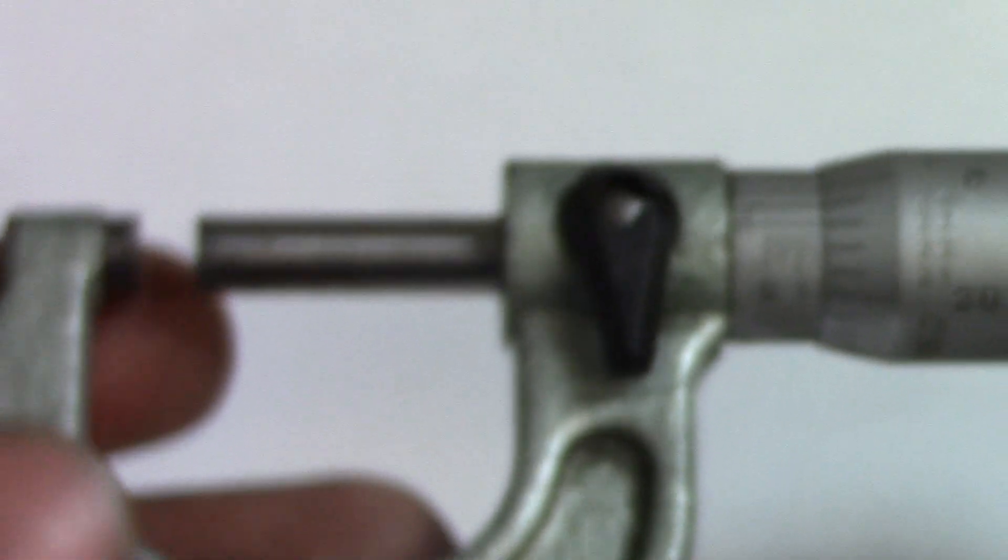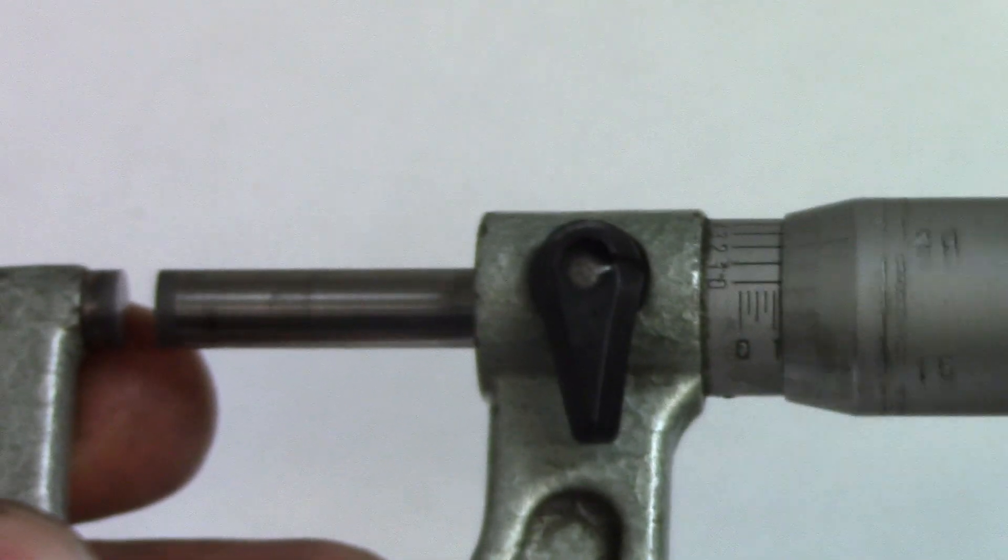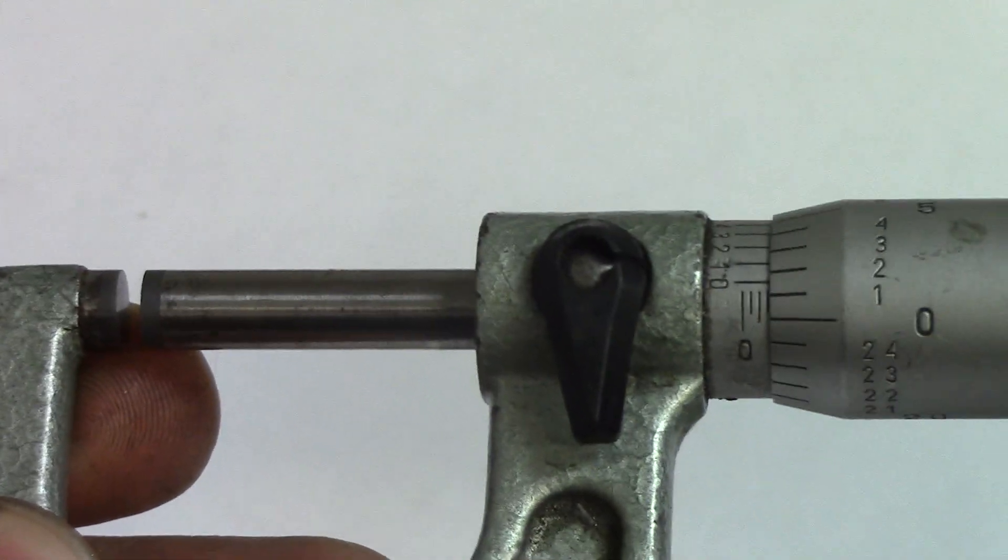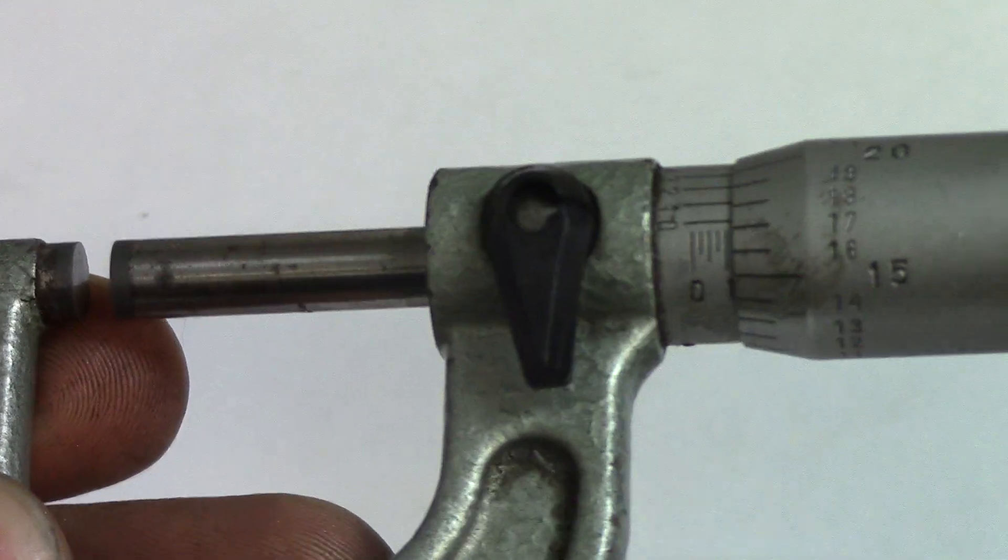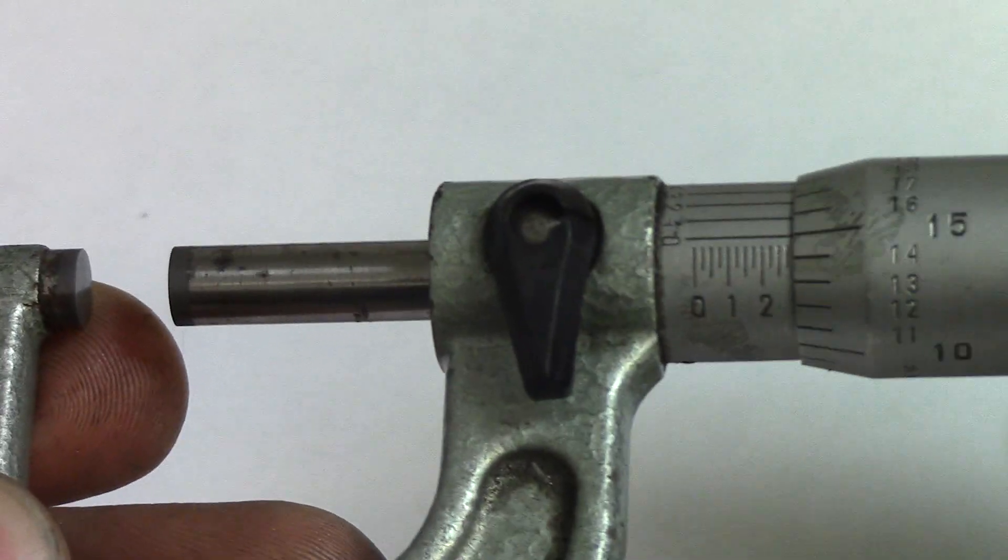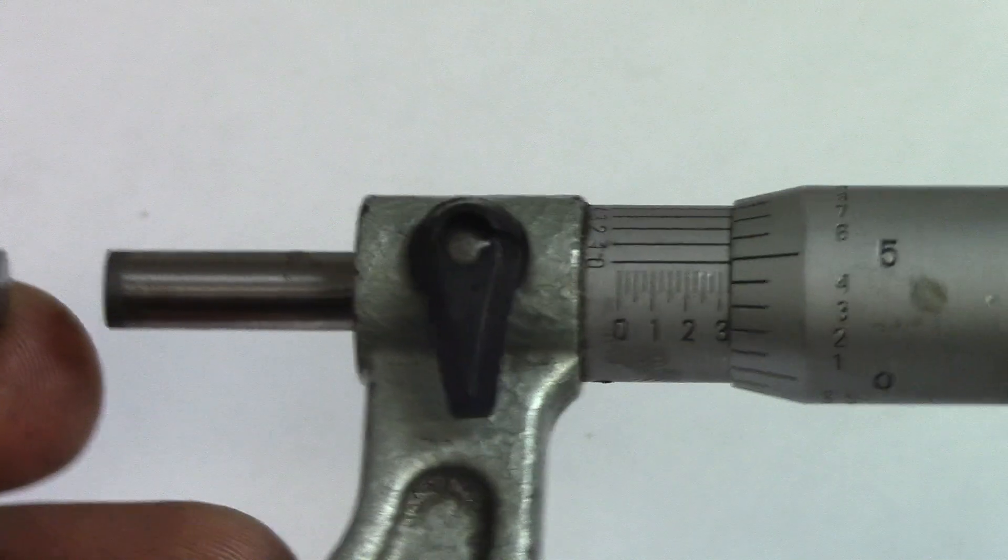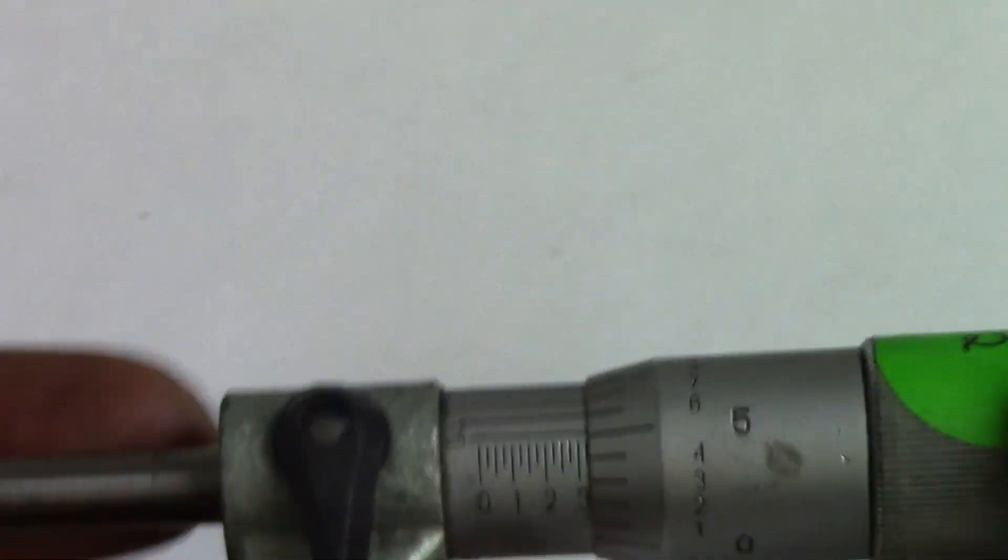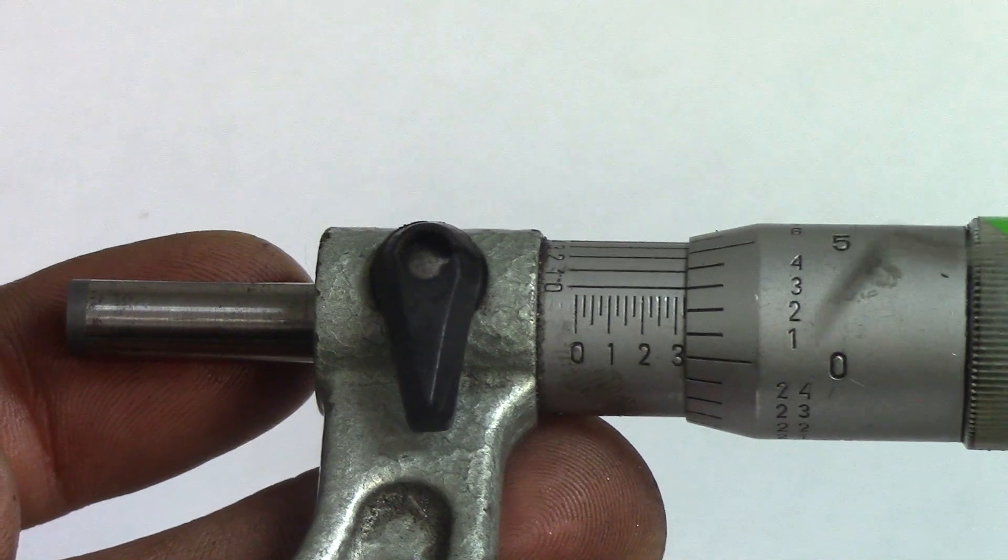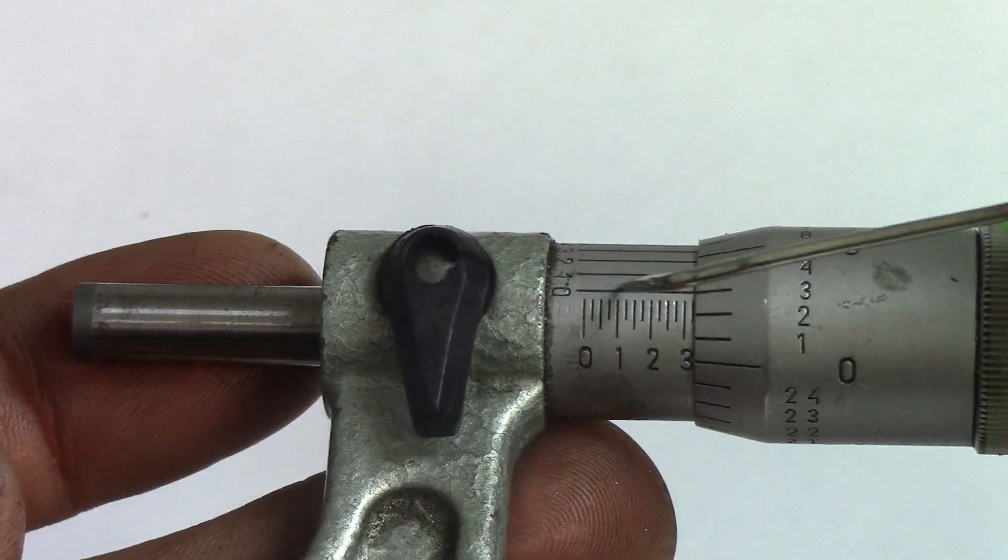These are 0-1 mics. If I close these all the way, they are at zero. When I open them up all the way to 10—as you can see it goes 1, 2, 3, 4, 5, 6, 7, all the way up to 10—when I get to that point it'll be at 1 inch.